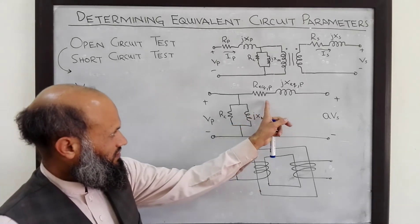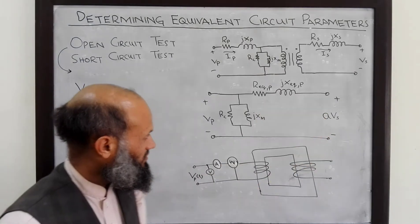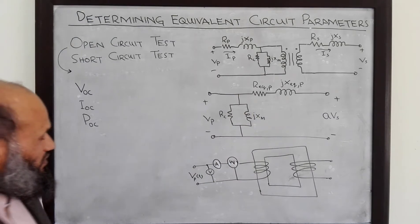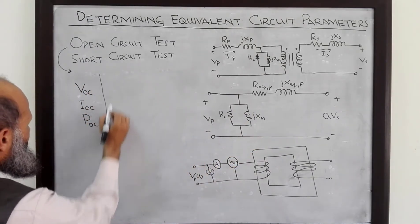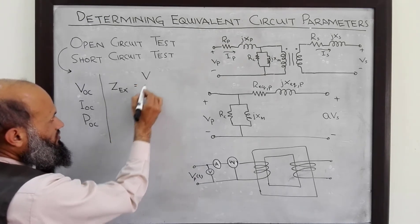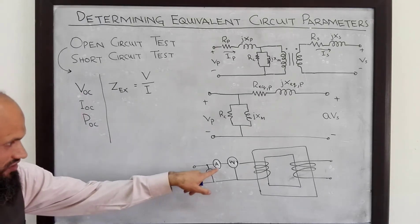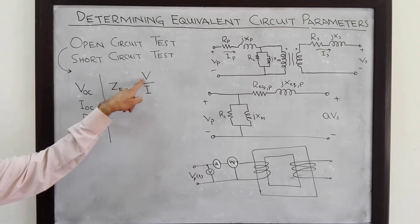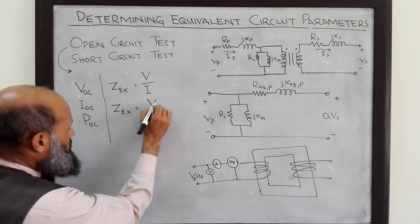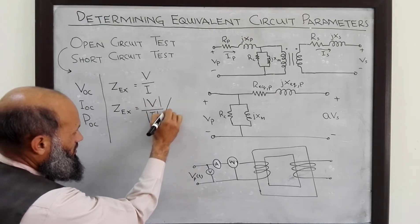Since the secondary is open circuited, no current is flowing in the secondary, meaning all of the power is consumed in the excitation branch. The impedance of the excitation branch, Z_excitation, is the ratio of the phasor voltage V to the phasor current I. However, since the voltmeter and ammeter cannot measure phase angles — only magnitudes — Z_excitation equals the magnitude of the voltage divided by the magnitude of the current, at phase angle theta.